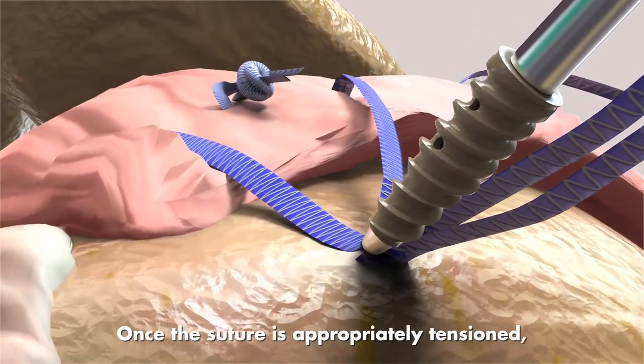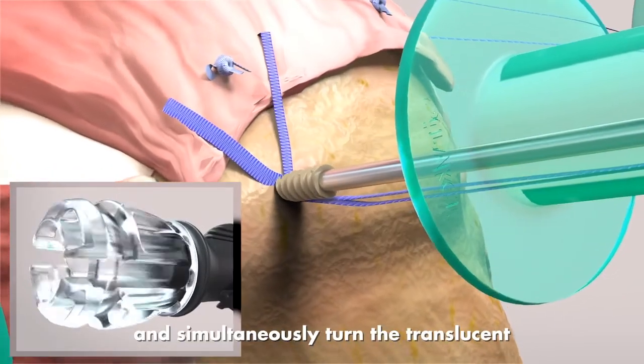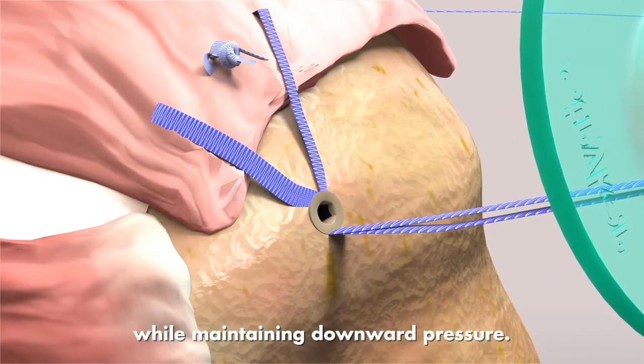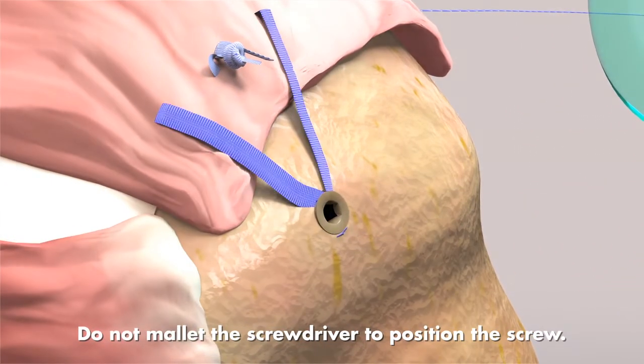Once the suture is appropriately tensioned, hold the black handle of the screwdriver and simultaneously turn the translucent proximal knob in the clockwise direction while maintaining downward pressure. Do not mallet the screwdriver to position the screw.